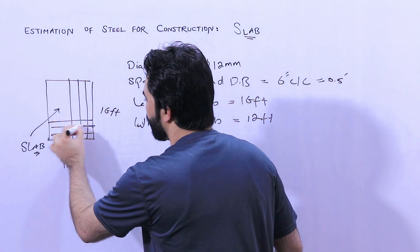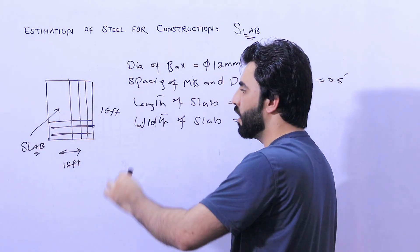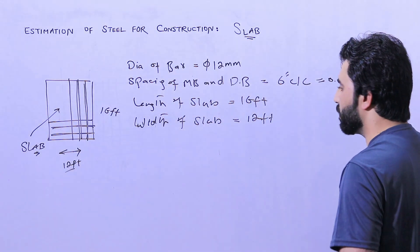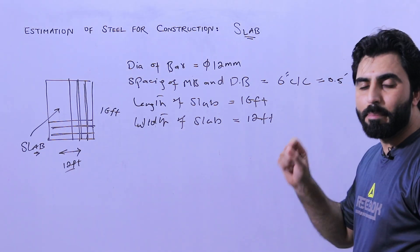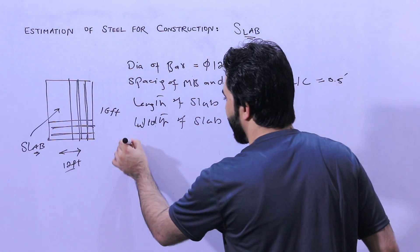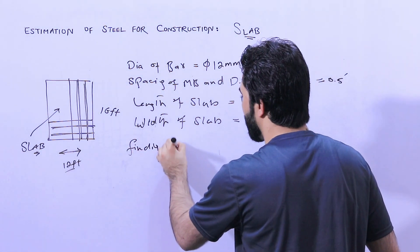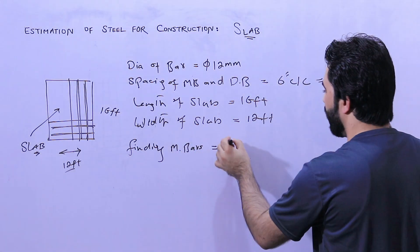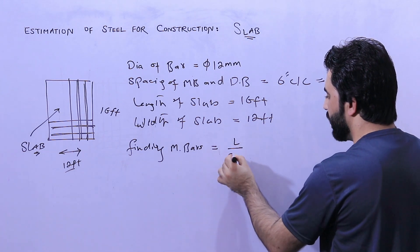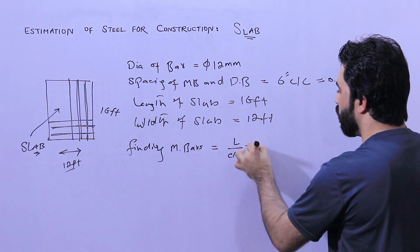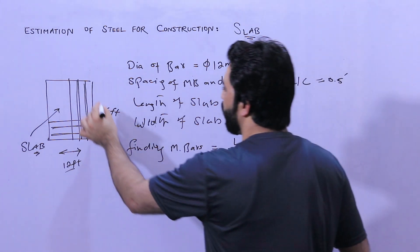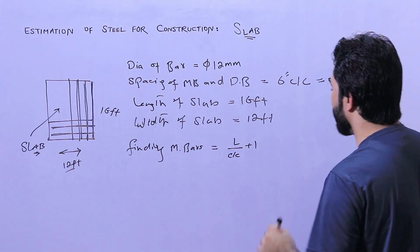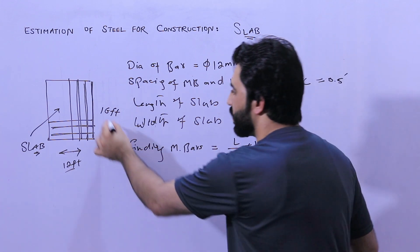As you can see, the main bars are provided lengthwise and the distribution bars are provided on the width side. Now let me guide you for finding the main bars for the slab. For main bars, the formula is: Number of bars = Length divided by center-to-center spacing, plus one. The 'plus one' accounts for the first bar at the starting edge.